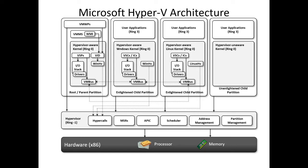Enlightened IO is a specialized virtualization-aware implementation of high-level communication protocols such as SCSI, that utilizes VMBus directly, bypassing any emulated device layers. Hyper-V enlightened IO and a hypervisor-aware kernel are provided via installation of Hyper-V integration services.